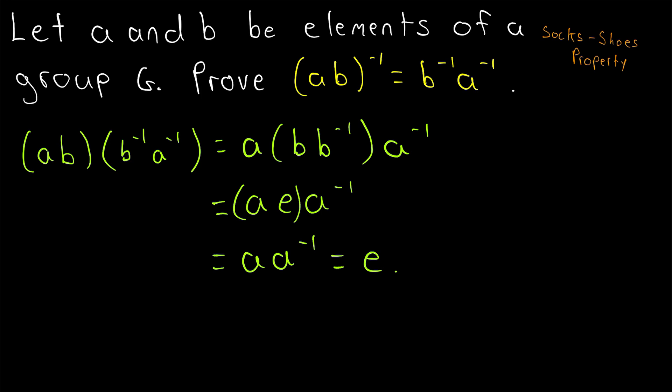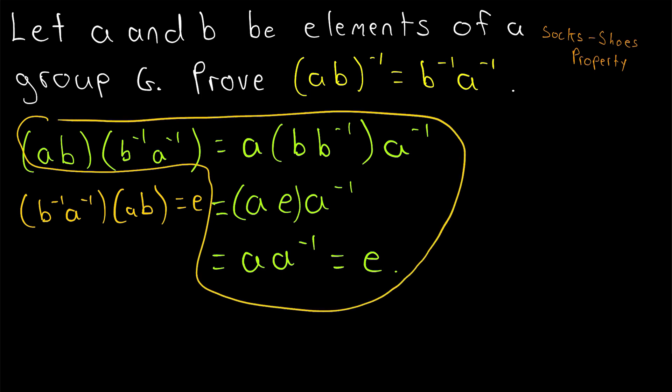And you might think to finish this proof, by definition of inverse, we'll also need to show that B inverse A inverse combined with AB in the opposite order is also equal to the identity. However, we really don't need to do that because the arbitrary elements A and B we took to begin with just as well could have been B inverse and A inverse. And then we would have gone through this exact same sequence of statements with slightly different elements.